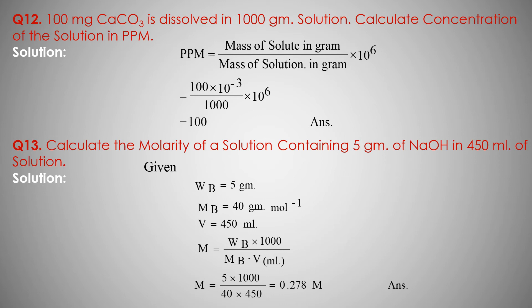Putting in values: Wb mass of solute is 5 gram, Mb molecular mass of solute is 40, V volume of solution is 450 ml, multiply by 1000. Molarity of solution equals 0.278.